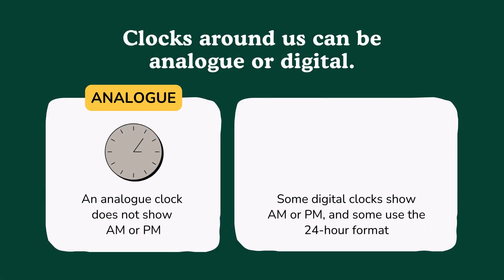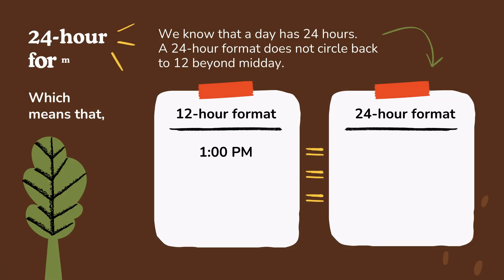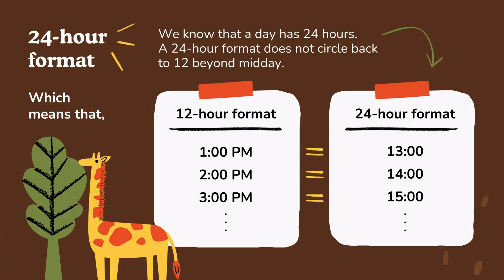Clocks around us can be analog or digital. An analog clock does not show AM or PM. Some digital clocks show AM or PM, and some use the 24 hour format. A day has 24 hours. A 24 hour format does not circle back to 12 beyond midday — for example, 1 PM, 2 PM, 3 PM in 12 hour format continue as 13, 14, 15 in 24 hour format.